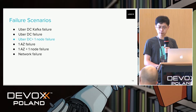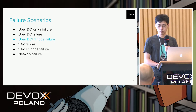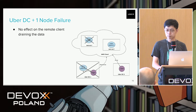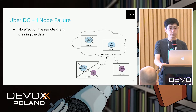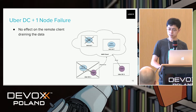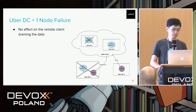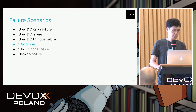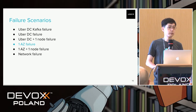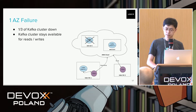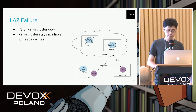The next failure scenario is the whole Uber data center down plus one node in the cloud also down. Similar to the previous one, writes stop but clients in remote data centers can still read from the cloud since there is at least one replica available there. The next scenario is one availability zone on the cloud going down — similar to the first scenario, one third of the Kafka cluster is down but the whole cluster remains available for reads and writes for all clients.